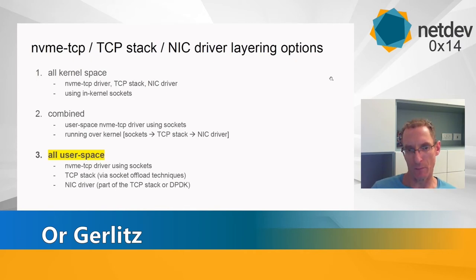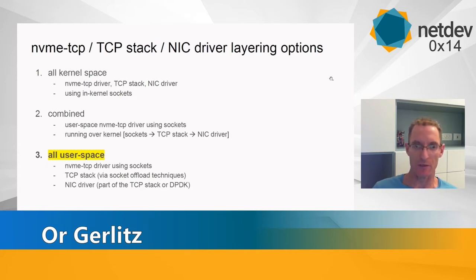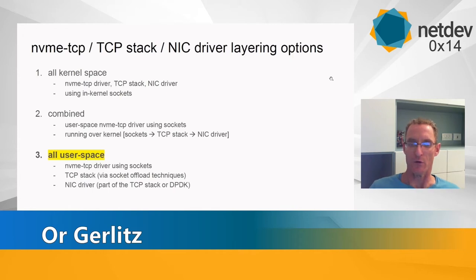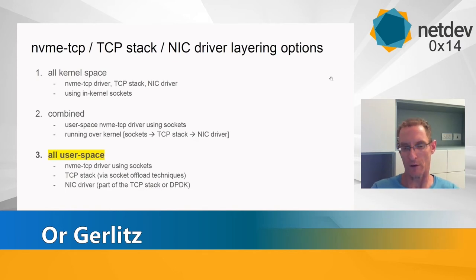The second option is a combined one: a user-space NVMe TCP driver using sockets, going into the kernel for the TCP stack and NIC driver. The third option — which we are using in our work — has everyone in user space: the NVMe TCP driver, the TCP stack, and the NIC driver. The TCP stack has to be replaced by a socket offload technique, and the NIC driver can be either part of that TCP stack or DPDK-based.